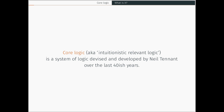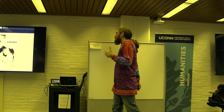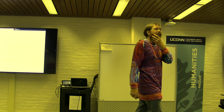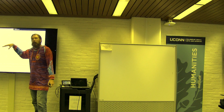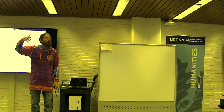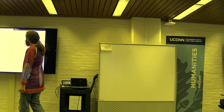Let's start thinking about core logic. It used to be called intuitionistic relevant logic — if you're familiar with any logic under that name, that's the very same logic, just a change in name. It's been devised and developed primarily by Neil Tennant, a philosopher at the Ohio State University, and as far as I can tell the first statement of core logic is from 1979. So this has been in development consistently and assiduously for decades. Here's one presentation of core logic — a natural deduction presentation. I'll walk you through this. You don't need to remember the details, but I want to give you a sense of the flavor of core logic.